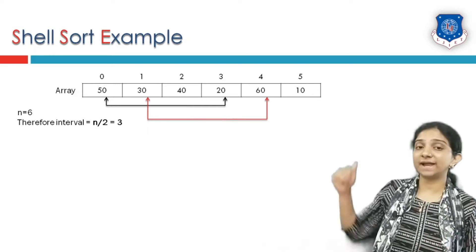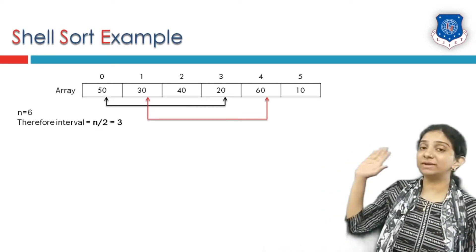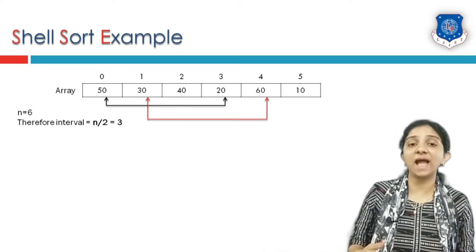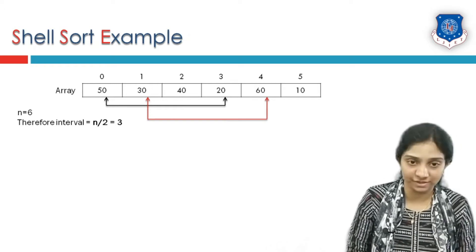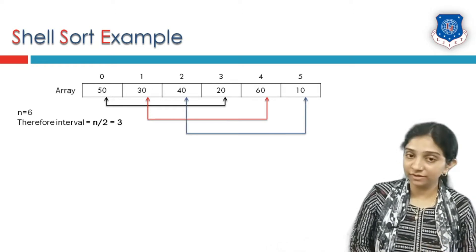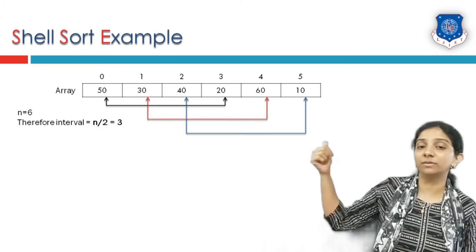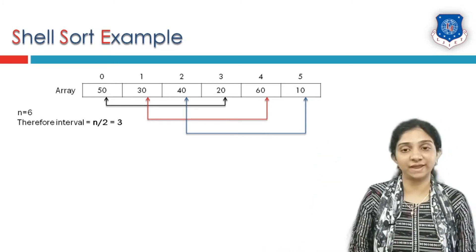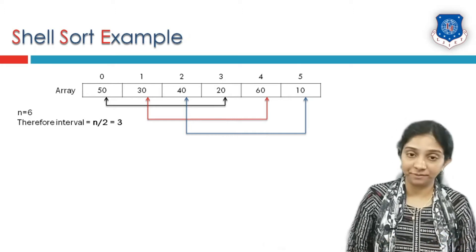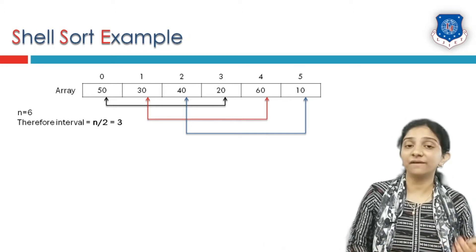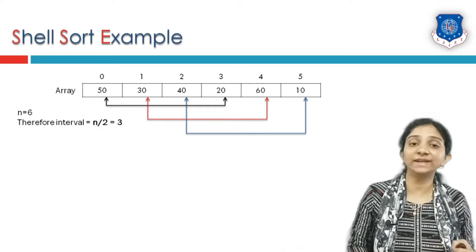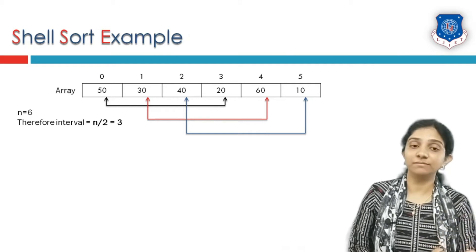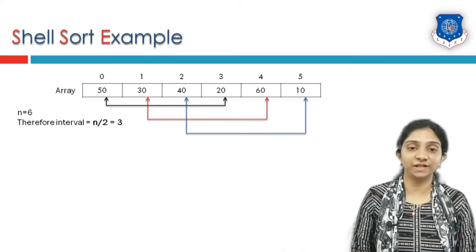Similarly, elements at index 1 and index 4, which are 3 elements apart, are considered part of the second sub-list. The third sub-list comprises elements at index 2 and index 5, which are again 3 elements apart. So we have 3 sub-lists generated, each 3 elements apart, which is the interval of shell sort.